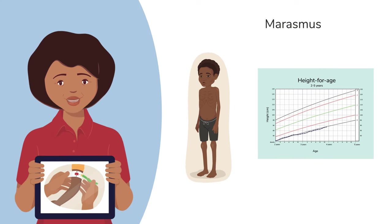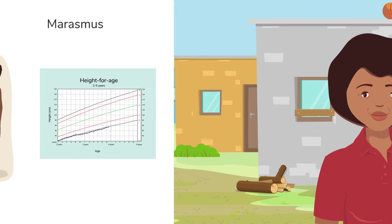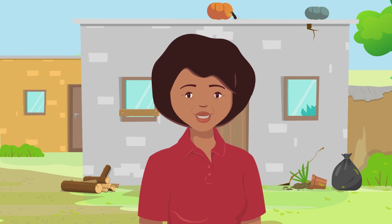A video in this module will show you how to determine if the child may have marasmus by a red reading on the mid-upper arm circumference, or MUAC tape. By recognizing these signs of malnutrition, you can take steps to get children the support they need to recover from malnutrition.